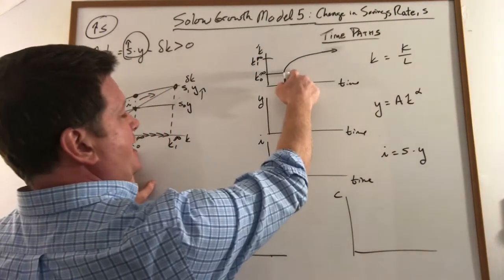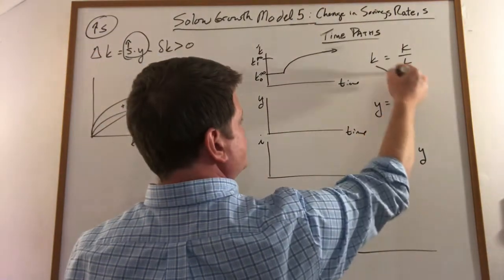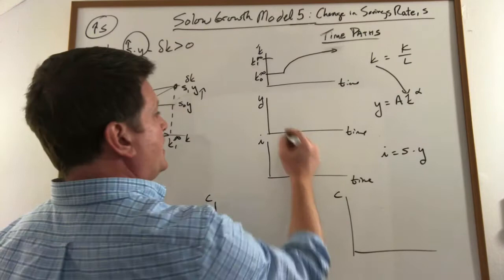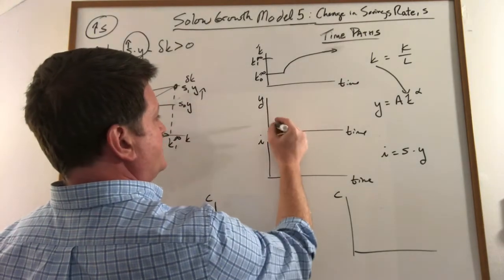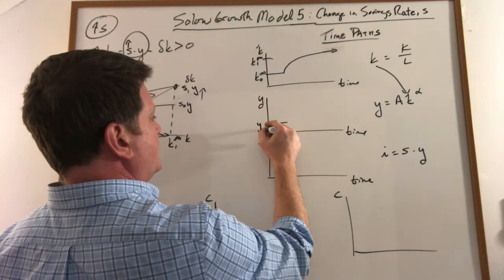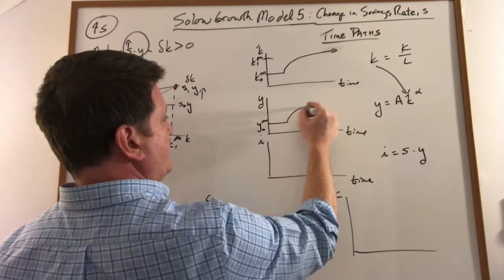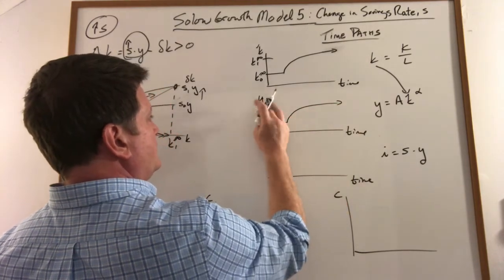Since we know what capital does, we can feed that into the production function and we know exactly what output does. It would also start here at its old steady state and begin rising to a new steady state.